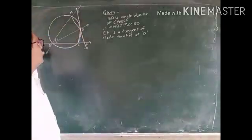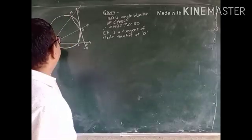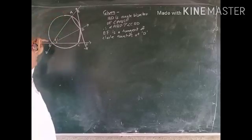See, here is a circle and angle ABC is inscribed in the circle. BD is the angle bisector of angle ABC.